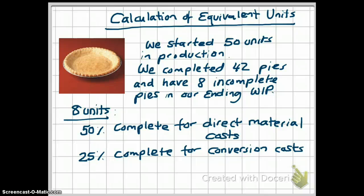These 8 units in our ending work in process have 50% of the direct material costs that a fully completed pie has, so we say they're 50% complete for direct materials. Similarly, these pies have 25% of conversion costs as a fully completed pie, so they're 25% complete for conversion costs.